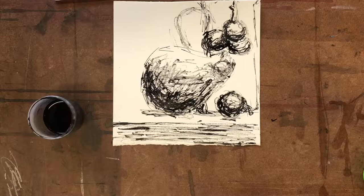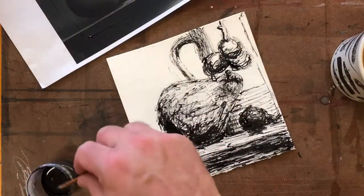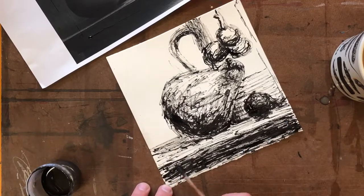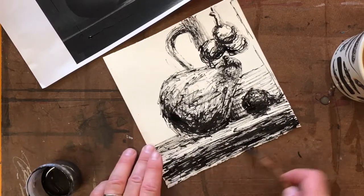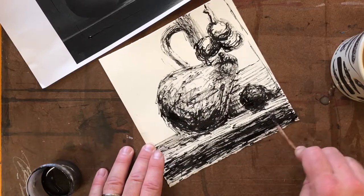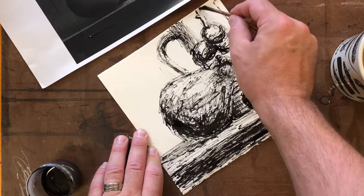Alright, pause the video there and we'll see what's going to happen next. So what I'm currently doing is just putting a little bit of dark down there initially, and then just sort of letting most of the ink come off the stick before I come up here to do some of the more subtle shadow work.